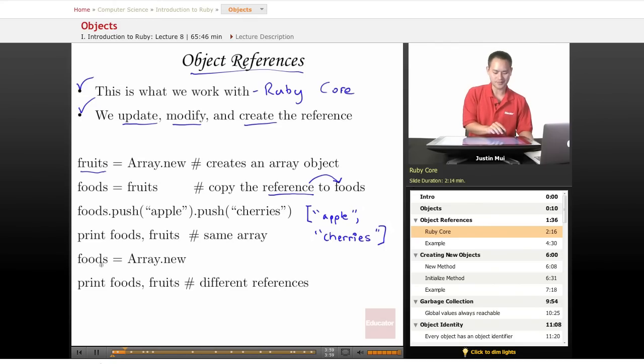But what happens if you create a new array with foods, you'll notice you print foods and fruits, they're actually different references now. One's pointing to essentially a new array object and another one still has these apples and cherries.